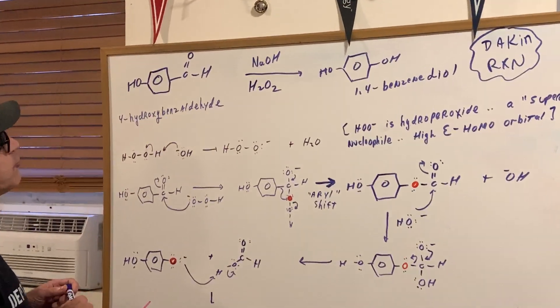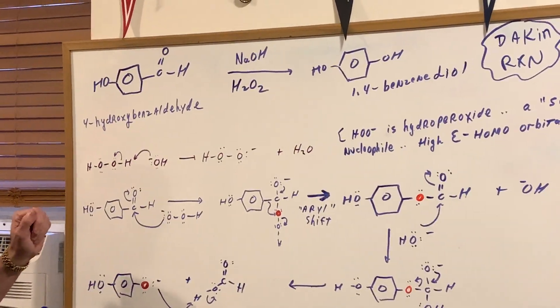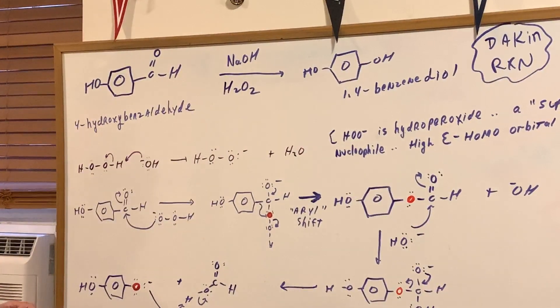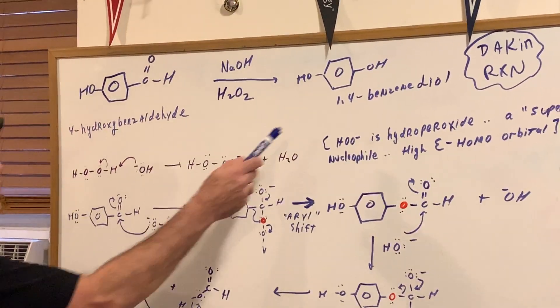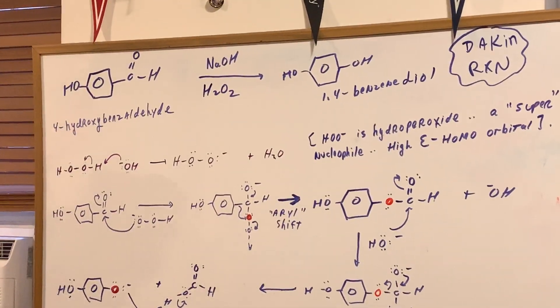You're going to take 4-hydroxybenzaldehyde and treat it with NaOH and peroxide, and you're going to form 1,4-benzenediol.